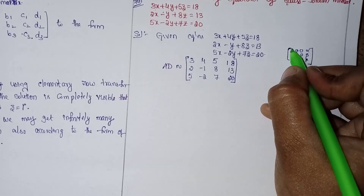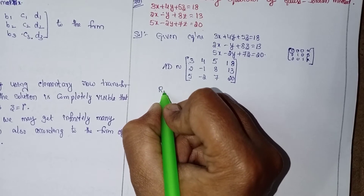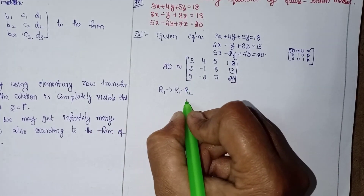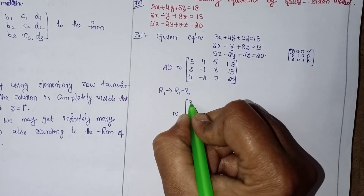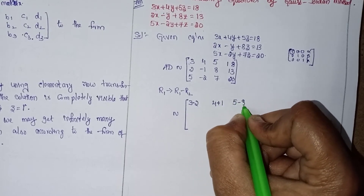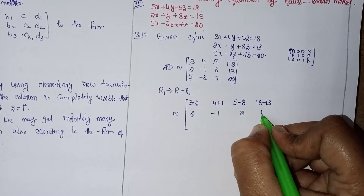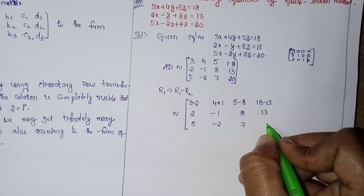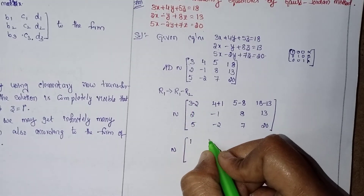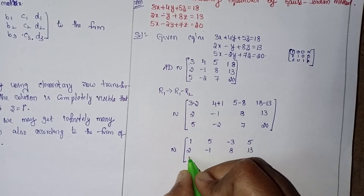We want to convert this into the form with 1, 0, 0 in the first column. First, convert the first element into 1. For this I can use the operation R1 → R1 − R2. I did not disturb R2 and R3, so write them as they are.